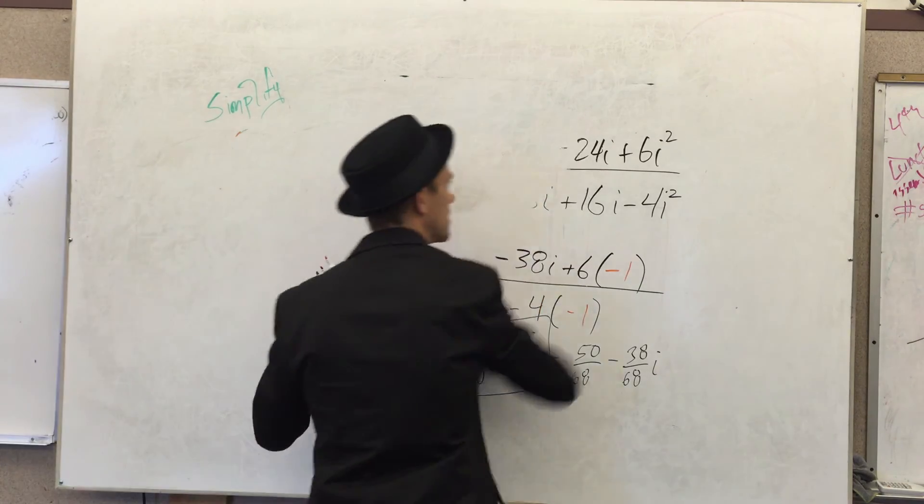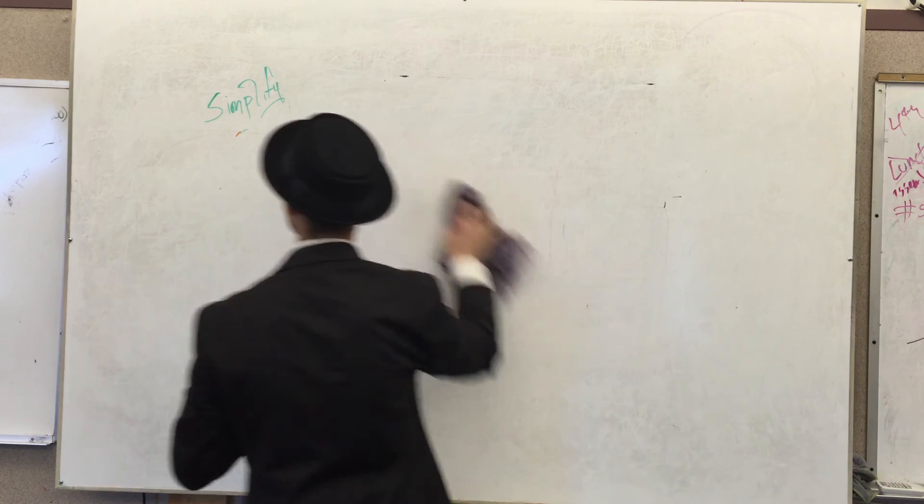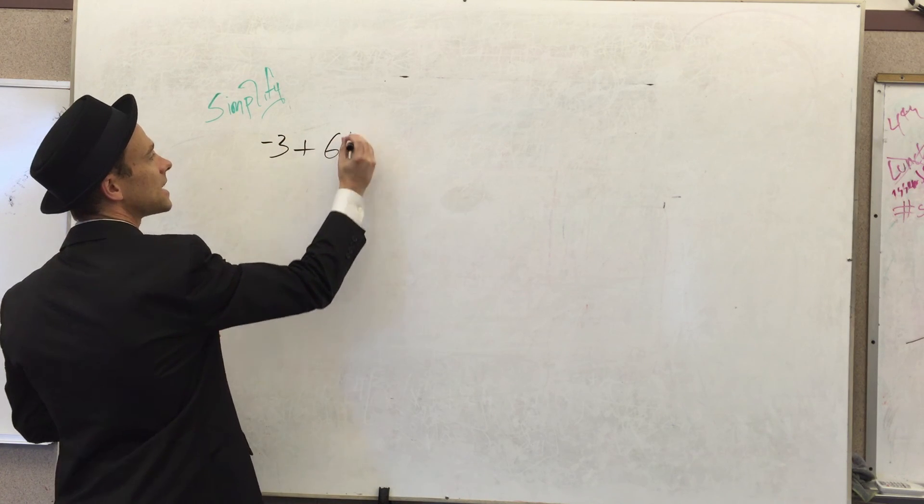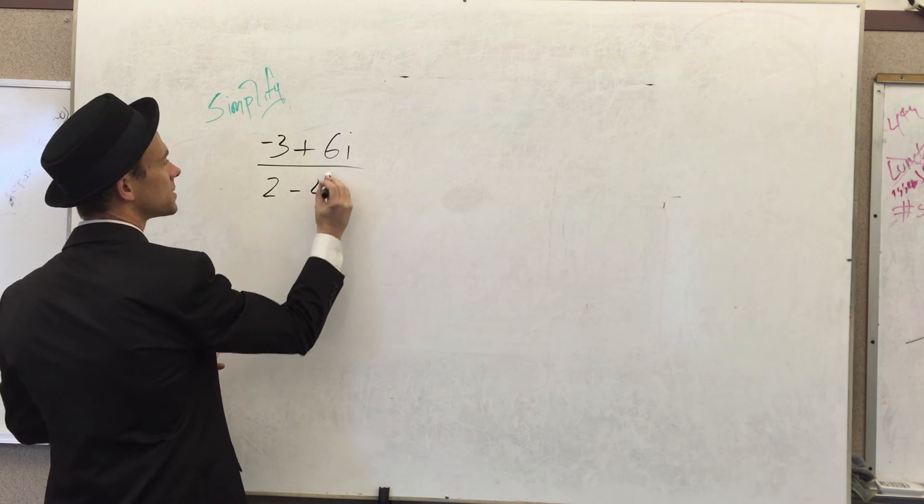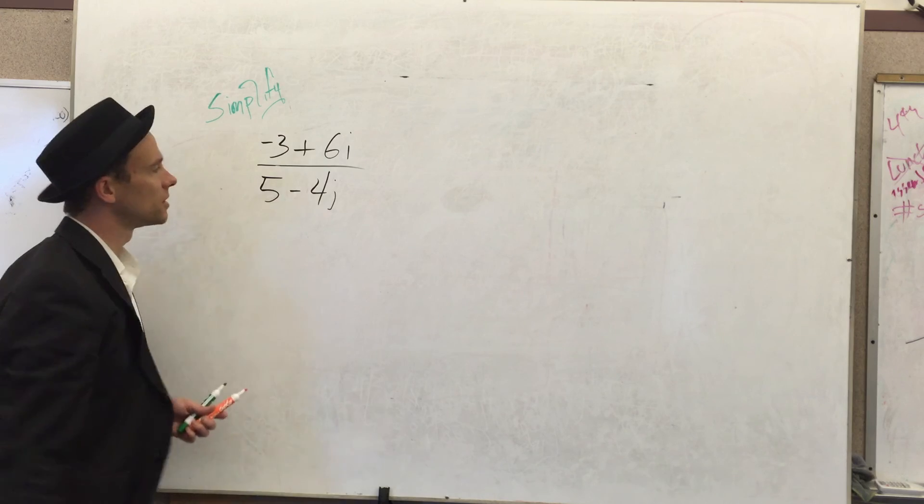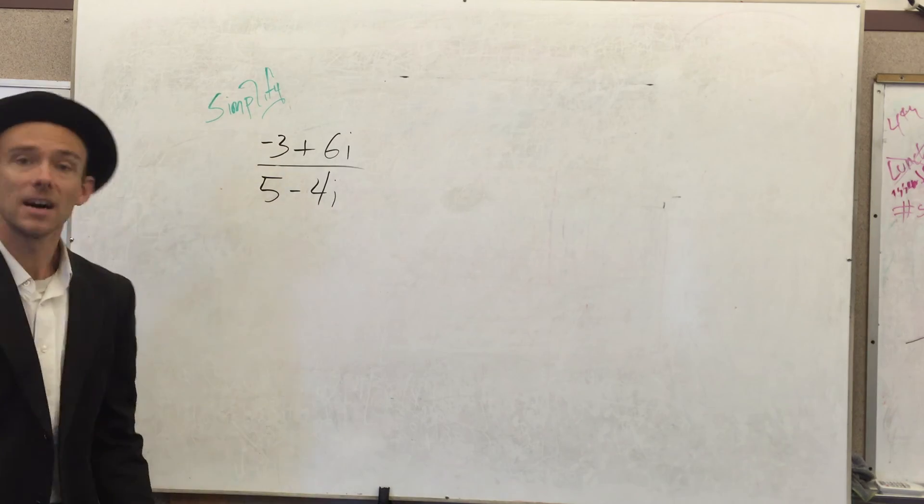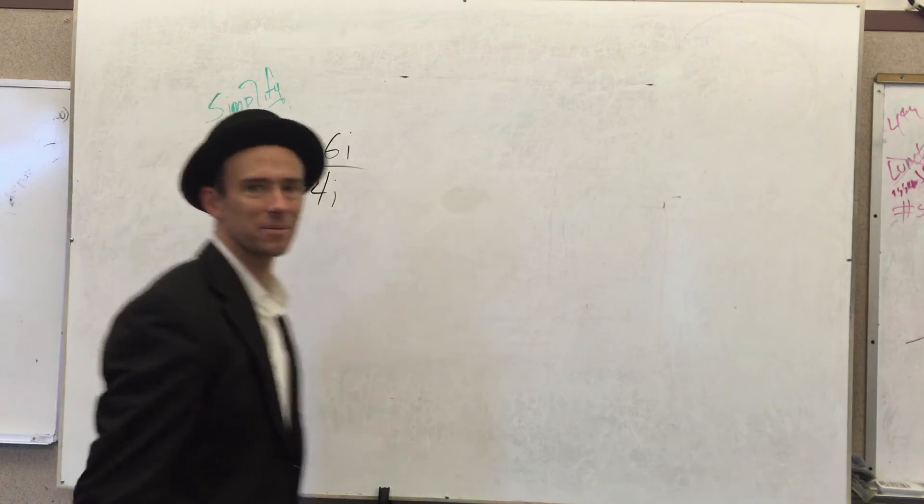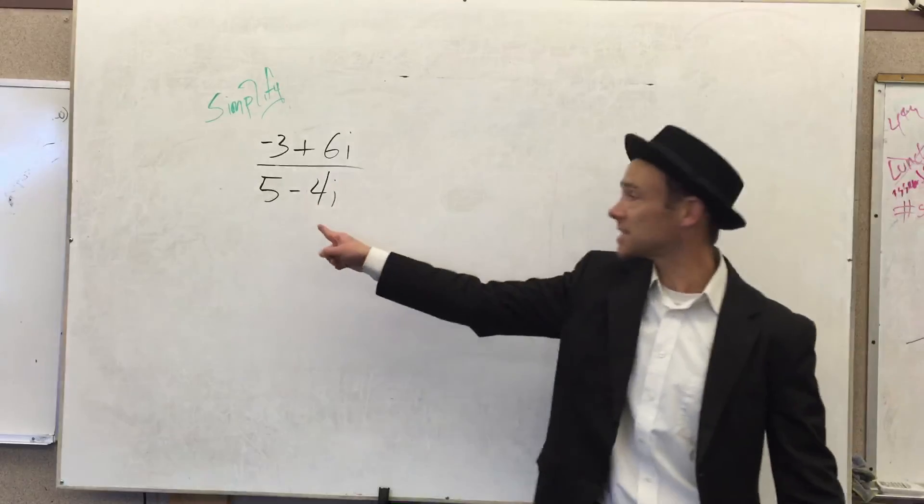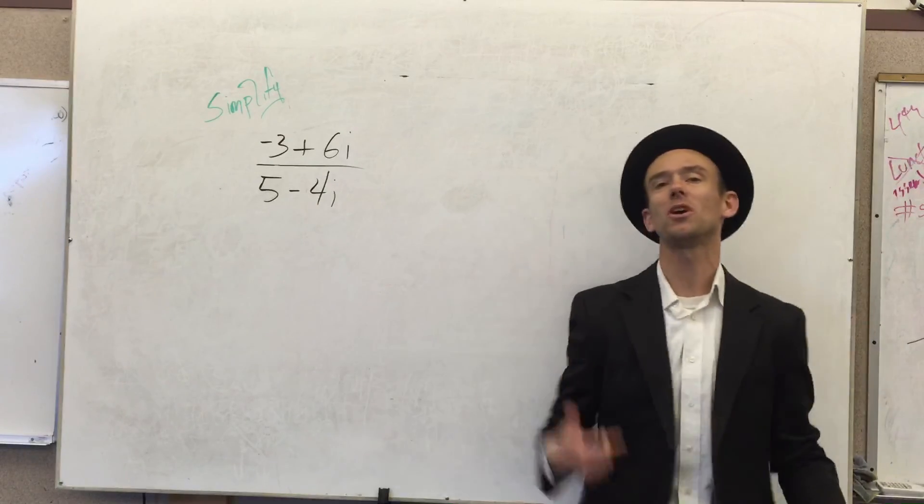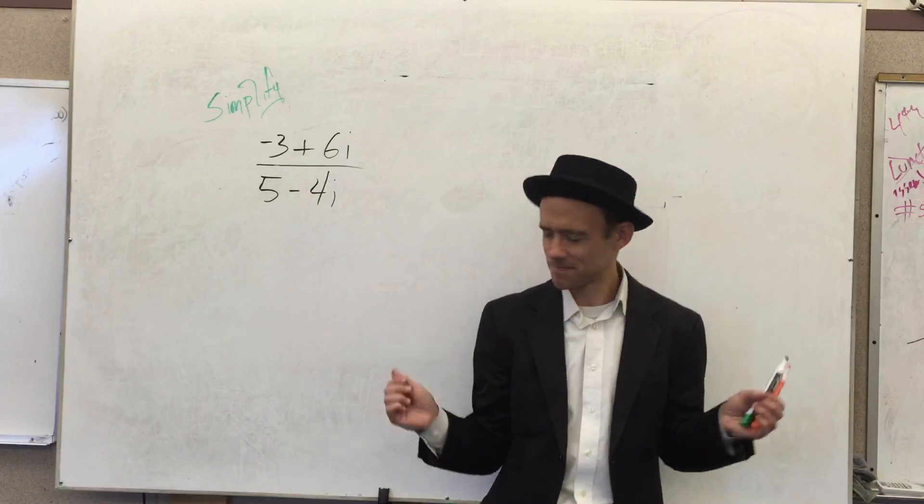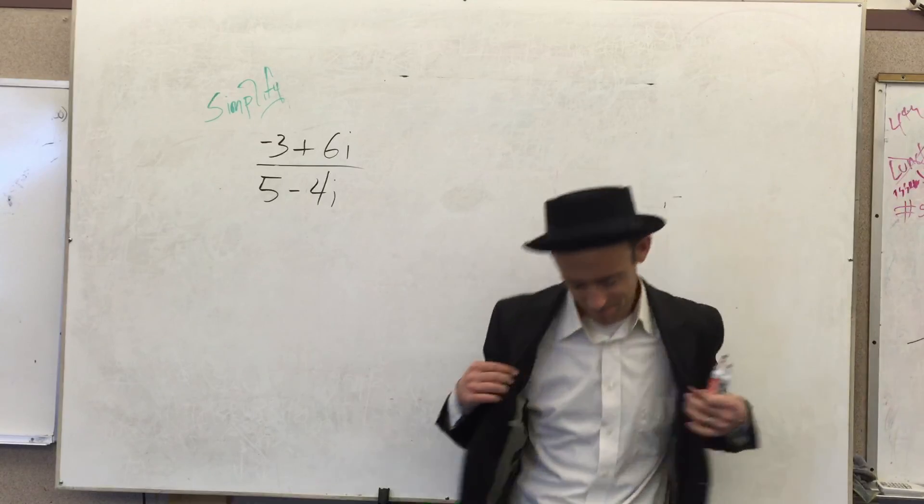Let's try just one more. Alright, here we go. Let's do negative 3 plus 6i over 5 minus 4i. Alright, so that's a beautiful song we just started playing. Let me turn it up for you real quick. Hit pause. I want you to attack this problem and then I want you to hit play and I want you to correct your work.